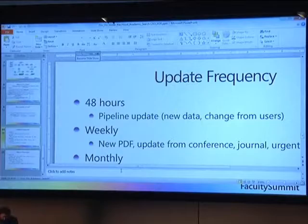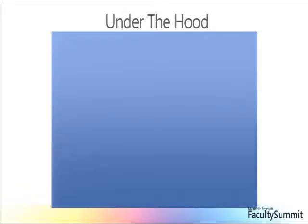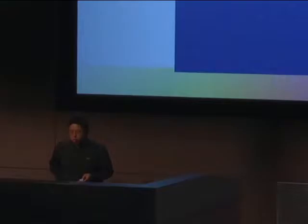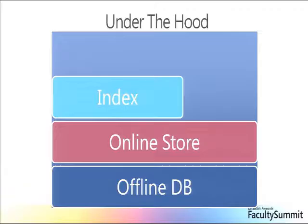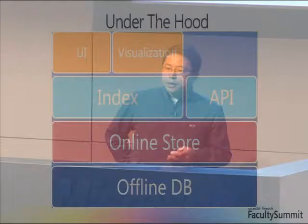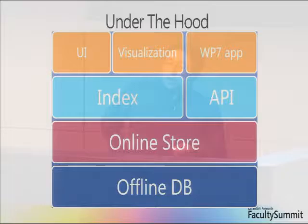That's all for the demos. On the infrastructure side, we designed a system that can handle hundreds of millions of entities. We have an offline database, an online store, an index, and an API. On top of that we have the UI layer and the visualization layer. We also have a Windows Phone 7 app you can download and run — so at a conference, you can quickly check out someone's information from your mobile phone.